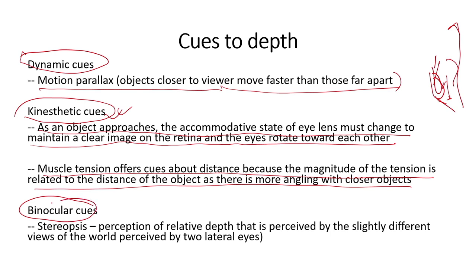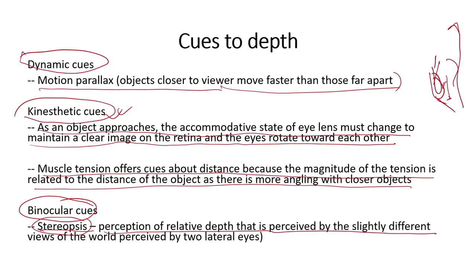There is something called the binocular cue, one feature of which is stereopsis. A simple experiment: take your finger, put it in front of you, and look at it first with the left eye closed, then with the right eye closed. You will see that the finger appears at different positions — there is a relative shift. This relative shift from the slightly different views perceived by the two lateral eyes helps in understanding depth and is called stereopsis or binocular disparity.